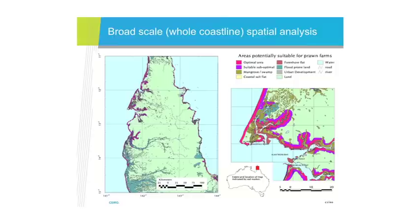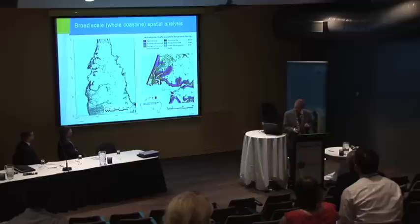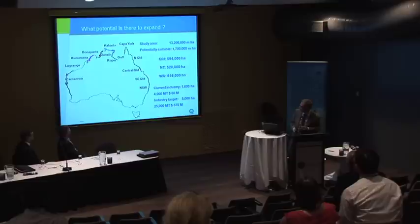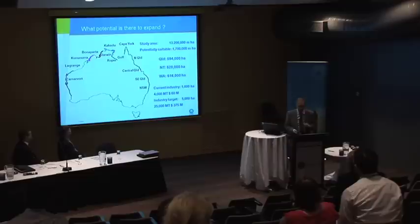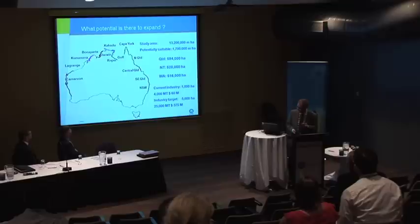We can do it at a huge scale. Here's some broad-scale analysis of the whole northern coastline — from New South Wales around to Perth — that's about 13 million hectares. Based on some fairly simple criteria, there's about 1.7 million hectares of coastal land potentially suitable for ponds, for barramundi or prawns or whatever you want to grow, quite evenly distributed between Queensland, the Northern Territory, and WA. To put that into perspective, there are currently 1,000 hectares of prawn farms, producing about 4,000 metric tons — roughly a $60 million industry, tiny.